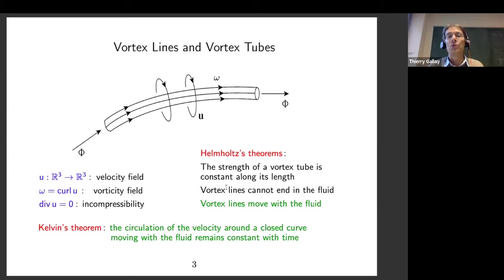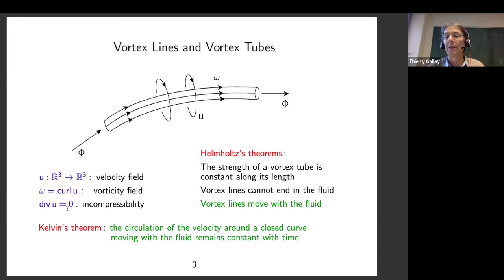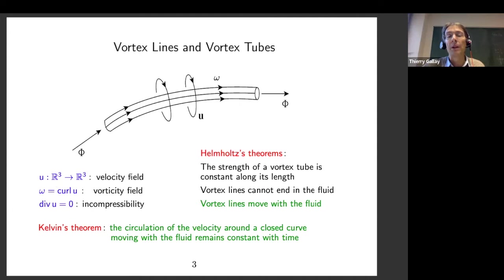Let me mention a few concepts from the paper by Helmholtz. Suppose you have a fluid that fills a three-dimensional domain, represented by a velocity field U, which is a smooth divergence-free vector field. You can introduce the vorticity field, which is just the curl of U. The integral curves of the velocity field are called streamlines, and for stationary flow they coincide with the trajectories of fluid particles. The integral curves of the vorticity field are called vortex lines.